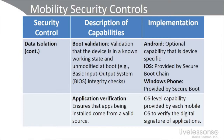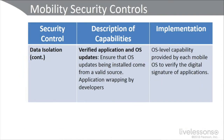We can also do application verification as part of our data isolation control — making sure that apps are being installed from a valid source, implemented at the operating system level to verify digital signatures of applications. Our final data isolation security control is verified application and OS updates, ensuring updates are installed from a valid source. This can also be provided using application wrapping by developers, involving the OS capability to verify digital signatures.